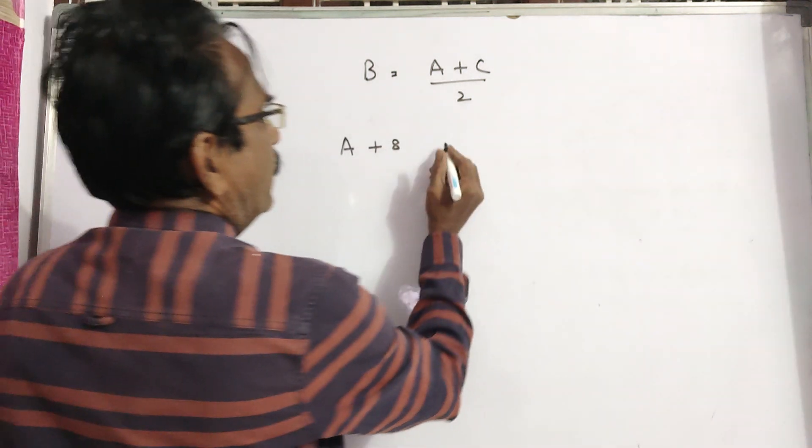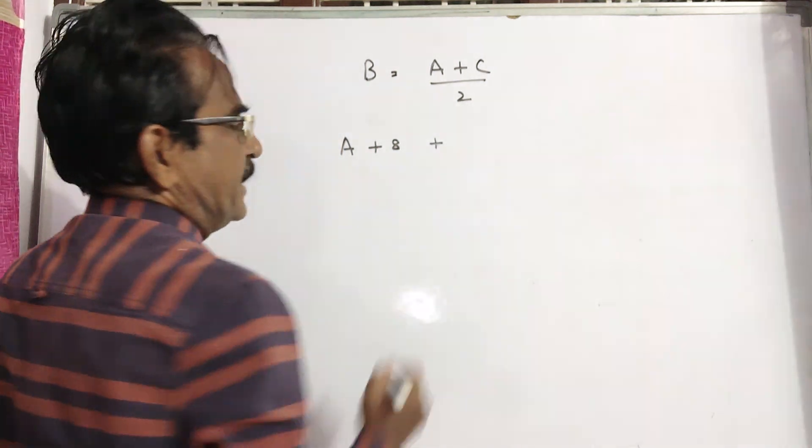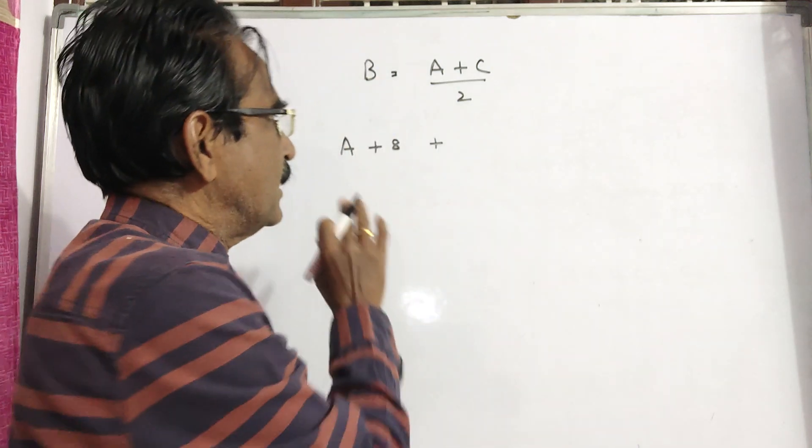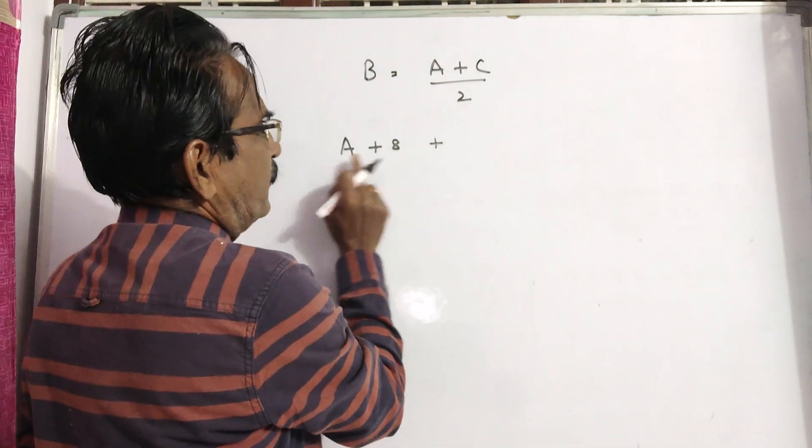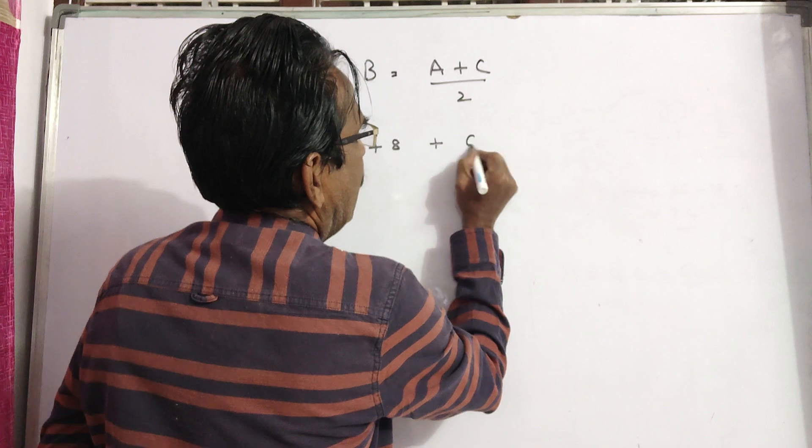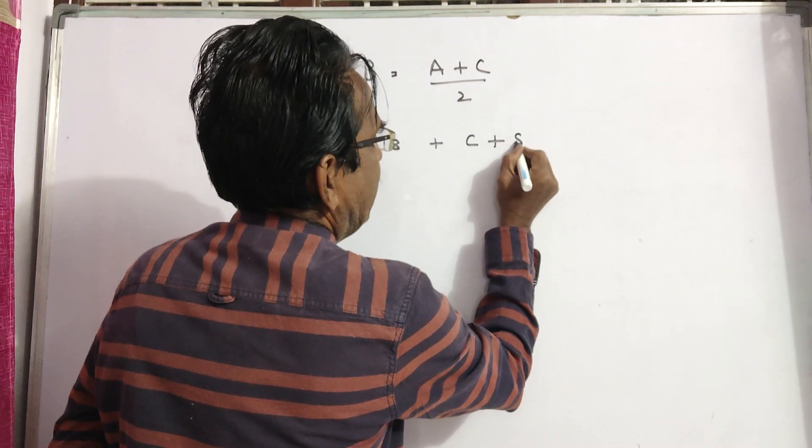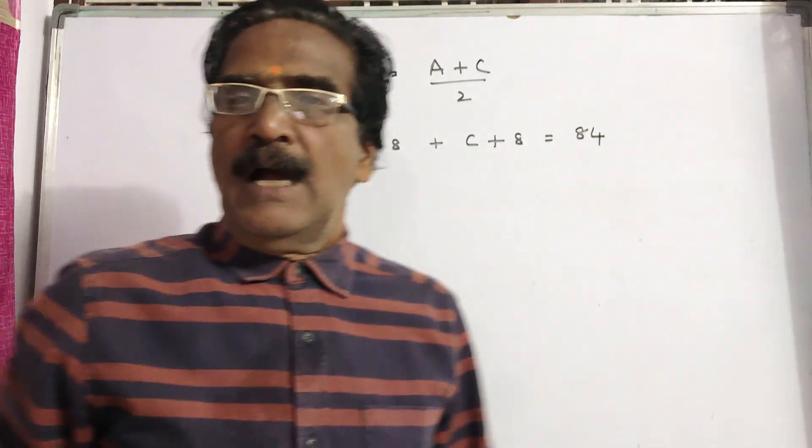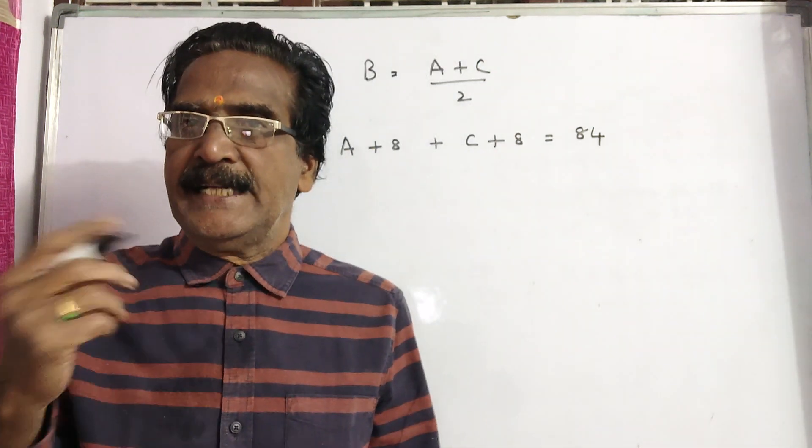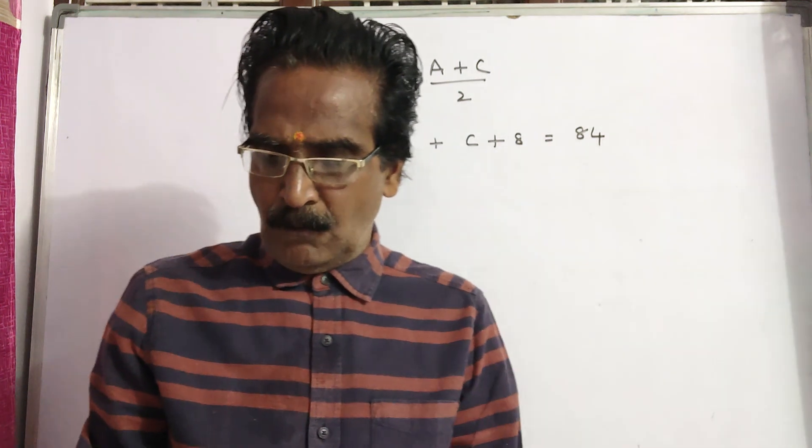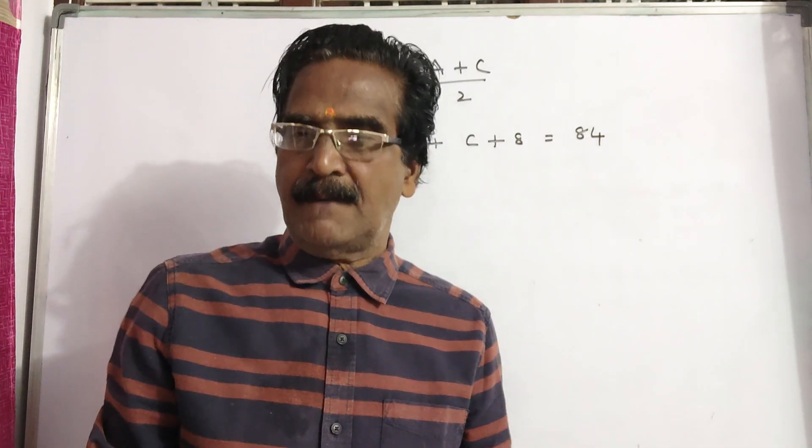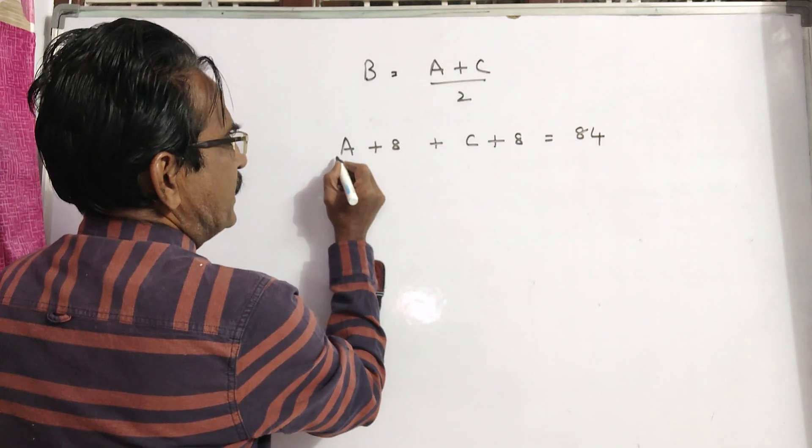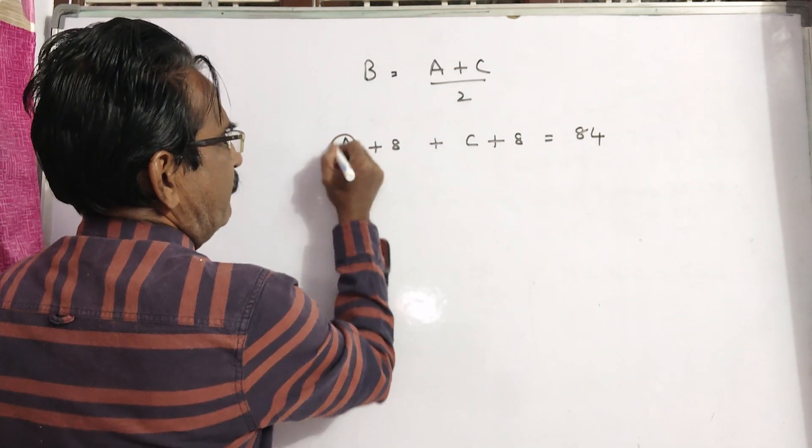8 years from now, A's age. Let us see that thing later. 8 years after, A plus 8 and C plus 8, this is equal to 84. This is given. And what else is said? 8 years from now, A's age will be 75% of C's age.